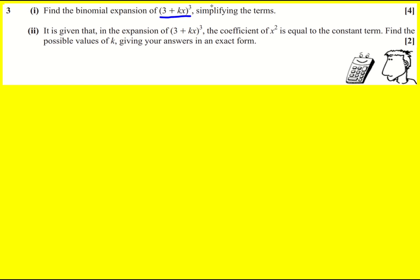We're asked to find the binomial expansion of 3 plus kx all to the power of 3, simplifying the terms. Now I'd be very tempted to just multiply the three brackets together here. Pretty sure I could speed run it doing that instead of the formula. Let's give it a go.